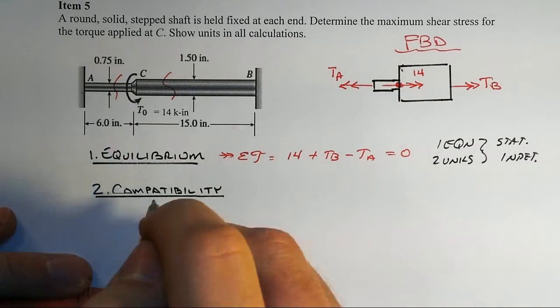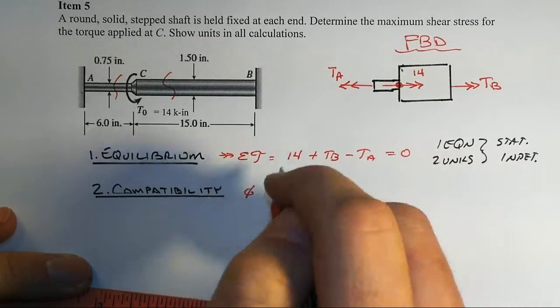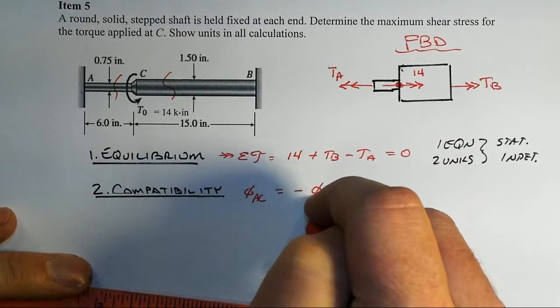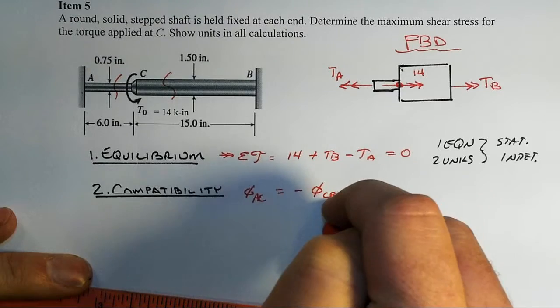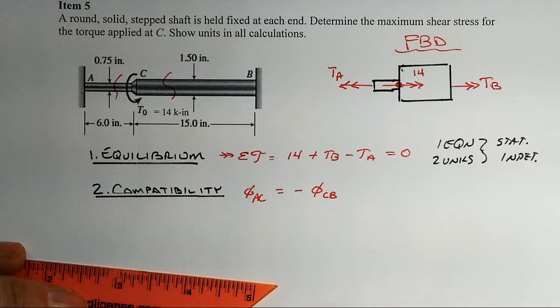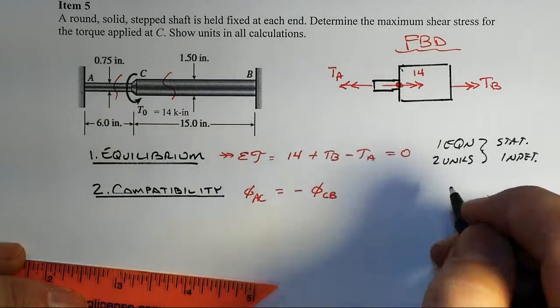Whatever the twist is in segment AC is going to have to be the opposite of the twist that happens in the right-hand segment.